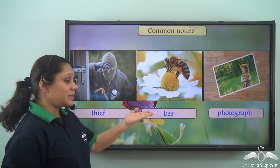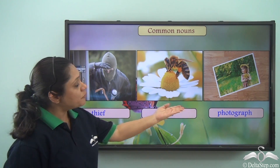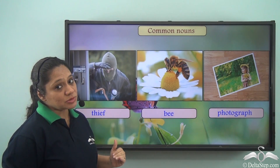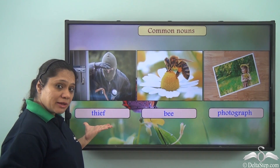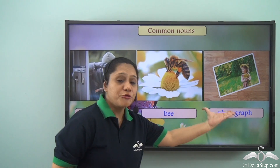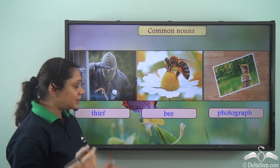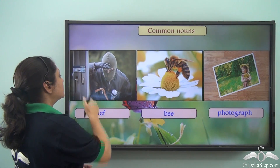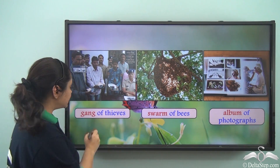Now let us see these words here: thief, bee, photograph. All these words are nouns and they are common nouns. When I say thief or bee or photograph, I refer to a single thief, a single bee, a single photograph.